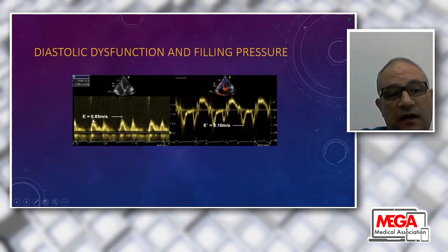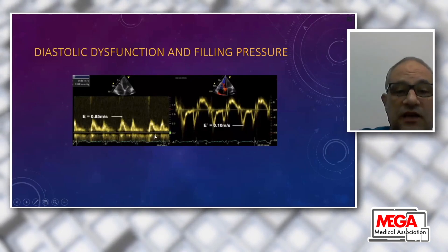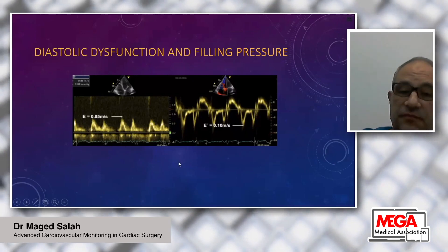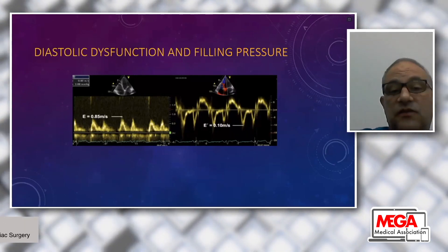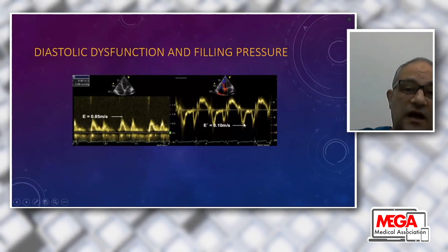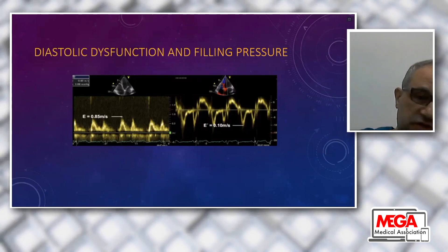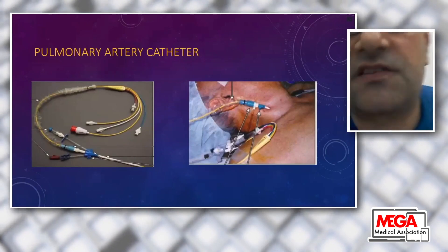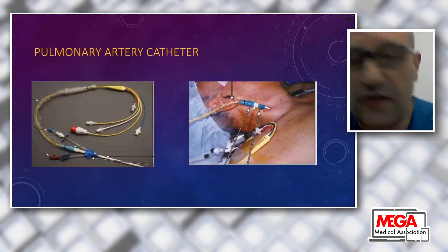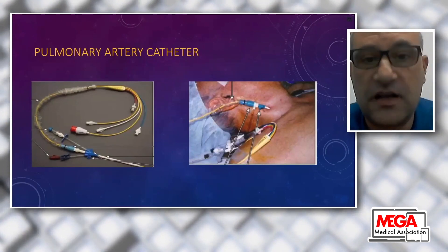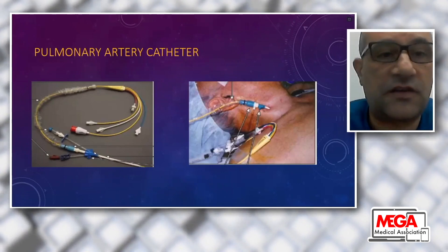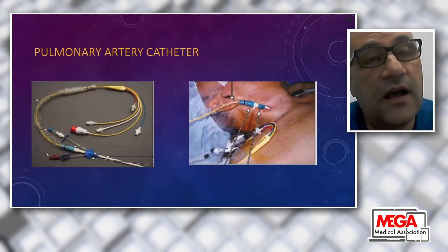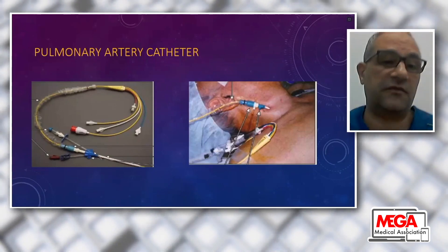By calculating the E-to-E-prime ratio—E of the transmitral Doppler over E of the tissue Doppler across the mitral annulus—I can estimate filling pressures. For example, a ratio of 8.5 is within normal range; if more than 14, it denotes high left atrial filling pressure and elevated pulmonary capillary wedge pressure. Echocardiography is our first-line advanced hemodynamic monitoring. Transthoracic echo is preferred when applicable; if image quality is poor, transesophageal echo provides the necessary information.